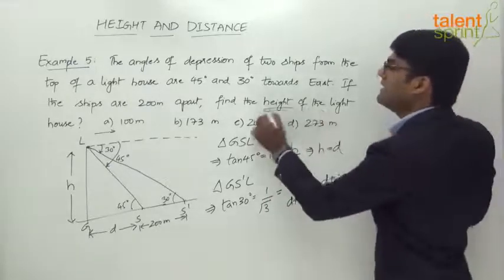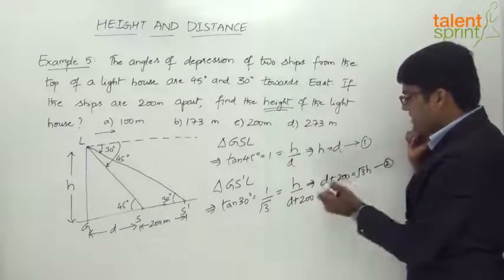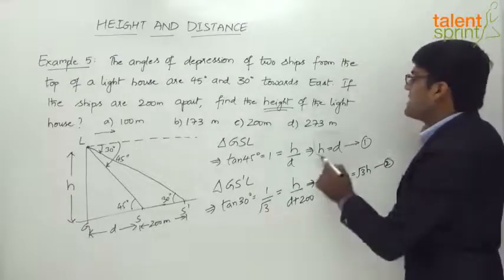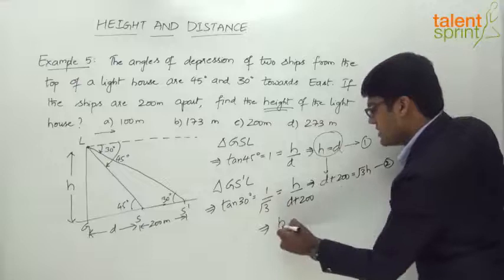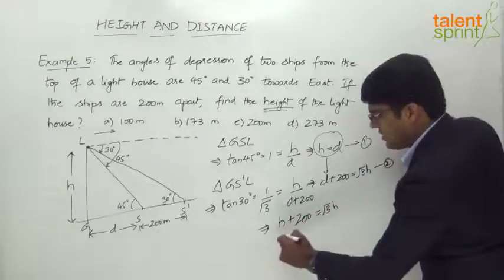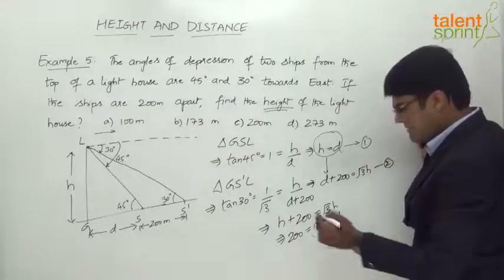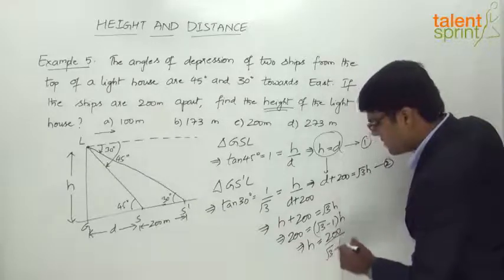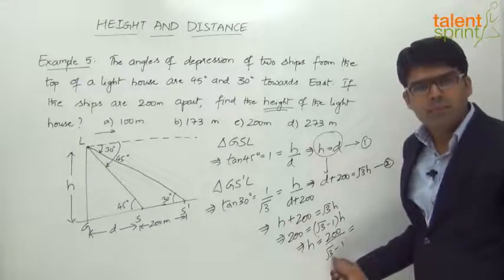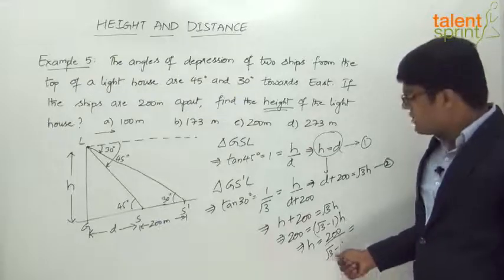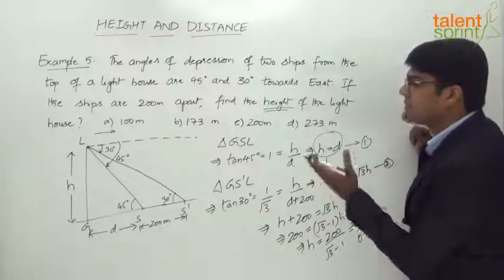Cross-multiplying gives d + 200 = √3 · h. That's our second equation. We now have two equations: h = d and d + 200 = √3h. Substituting d = h into the second equation: h + 200 = √3h, so 200 = (√3 − 1)h, giving h = 200/(√3 − 1). With √3 ≈ 1.732, the denominator is 1.732 − 1 = 0.732, so h = 200/0.732 meters.